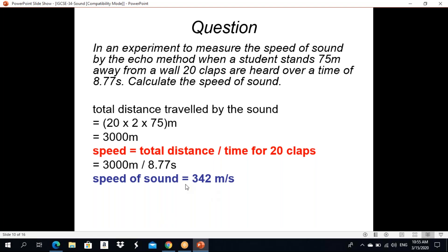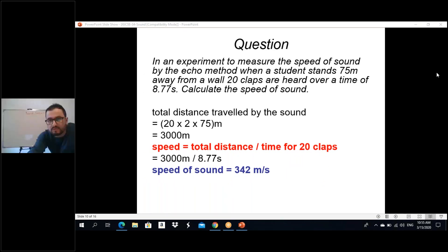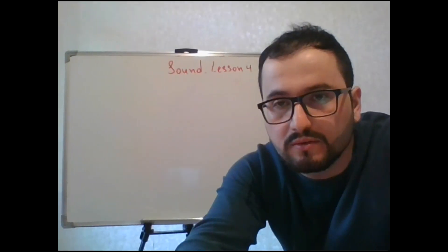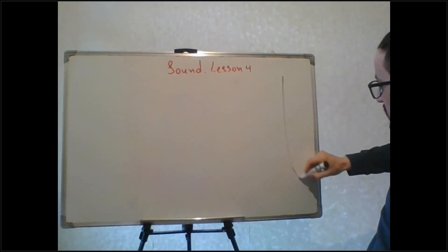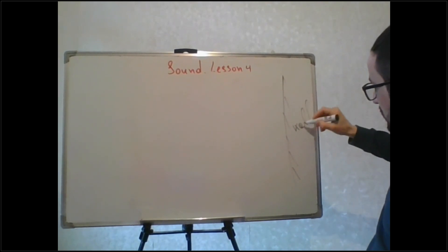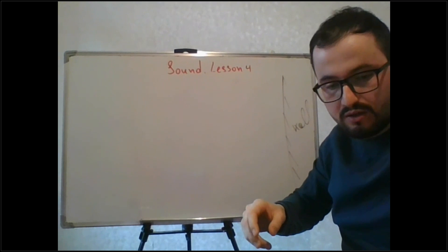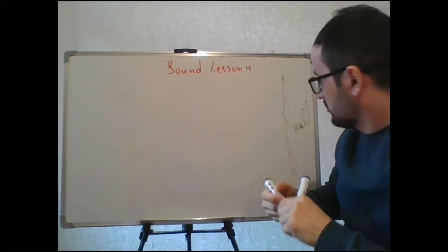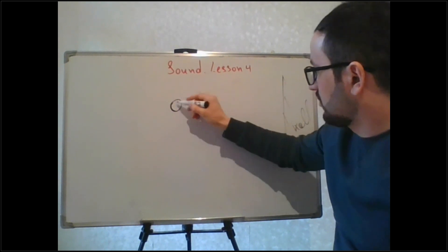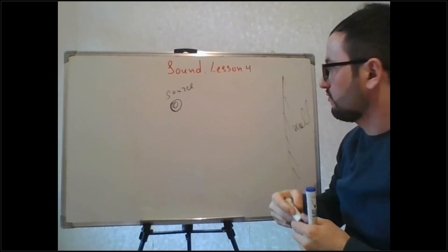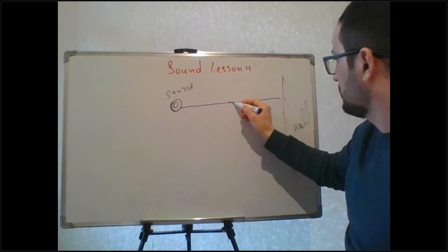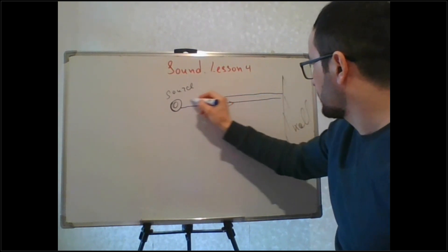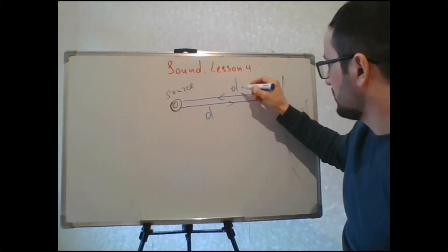Now I'm going to explain this question on the board. Let's imagine that here is a wall, and this part is the source of sound — for example, like a loudspeaker. Sound is going in this direction and it is coming back — it's reflected. Distance d going and distance d coming back. So total distance is 2 × d.